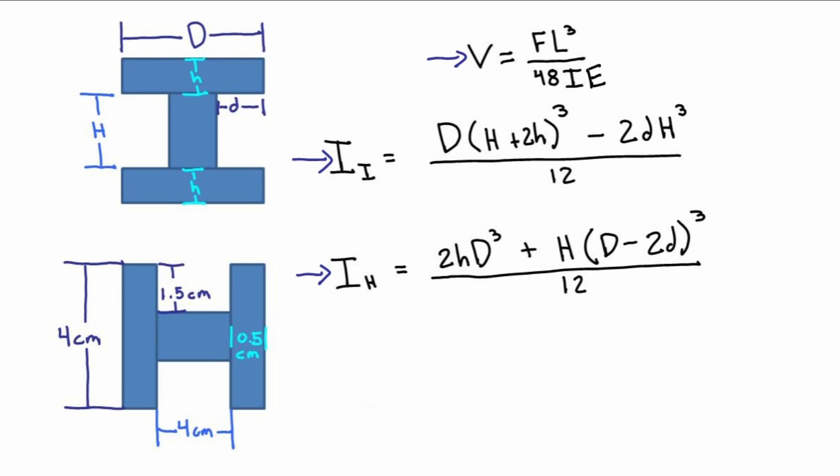Now the only value that's going to change when we change the orientation of the I-beam is going to be the moment of inertia. So if we want to find the ratio of the deflection of the H-beam over the deflection of the I-beam, all we have to do is find the ratio of the moment of inertia of the I-beam over the moment of inertia of the H-beam.